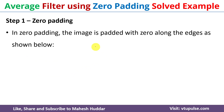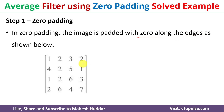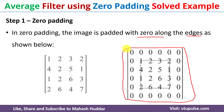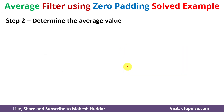In zero padding, the image is padded with zeros along the edges, as shown here. This is the given input image. For this, we will pad the zeros along the edges — you can see here that along the edges we have padded the zeros. Once you pad the zeros along the edges, the next step is to determine the average value.